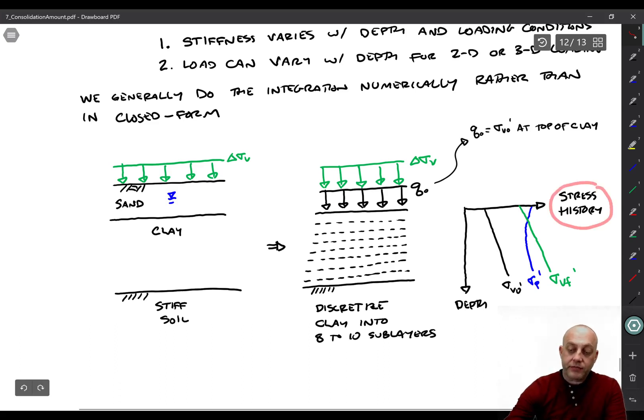And then we need to know the stress history. So that would be, what is sigma v0 prime as a function of depth? This is q0 right here, right? q0 is the effective stress right at the top of the layer. Then importantly, what is sigma p prime? And the maximum past pressure might vary with depth. It might be constant, but it might also change with depth. And then we have to know the final vertical effective stress, which is shown by the green line. And the sigma v0 prime and sigma vf prime are parallel in this case. They should be parallel because delta sigma v is a constant number. And that horizontal distance is delta sigma v.